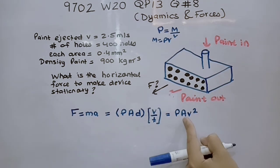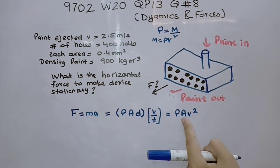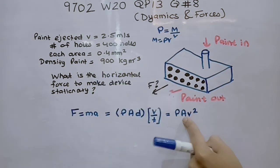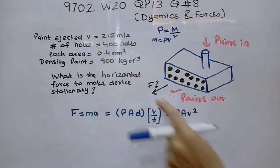Density into area into velocity square. We have the density, we have the area and we have the velocity. So what we require is to find the force. Now let's just simply plug in the values and see what is our answer.